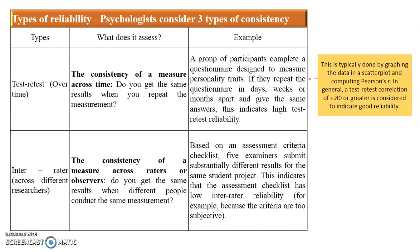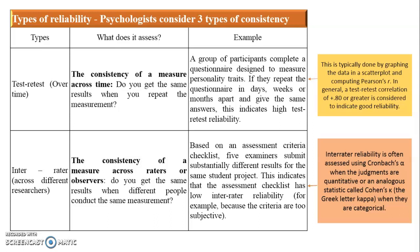Similarly, in research, if there are more than one examiner or observer, they might have different or same opinions. If they agree, it is high inter-rater reliability; if not, it is lower. One major disadvantage of this type is that the criteria is very subjective, since observers are individuals and subjectivity can affect their opinions. To compute it, you can use Cronbach's alpha when judgments are quantitative, or Cohen's kappa (κ) when data is categorical.